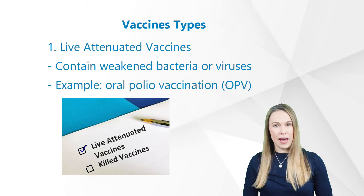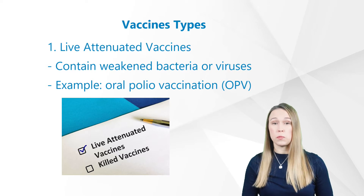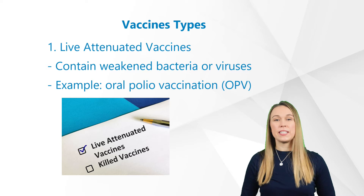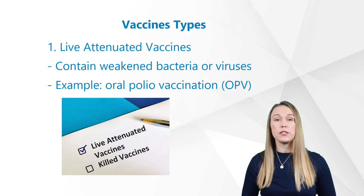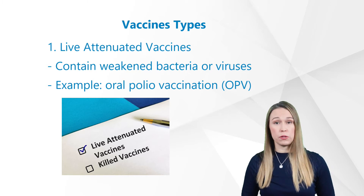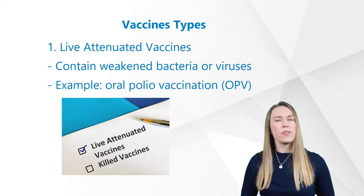Let's start with the live attenuated vaccines. Live attenuated vaccines contain weakened bacteria or viruses that can usually multiply and trigger an immune response, but usually not a disease. Attenuation is understood in microbiology to mean the targeted reduction of the pathogenic properties of a pathogen — its virulence — while its ability to reproduce is retained or only slightly reduced. An example is the oral polio vaccination, or OPV. Compared to inactivated vaccines, attenuated vaccines produce a stronger and more durable immune response with a quick immunity onset.